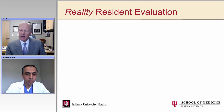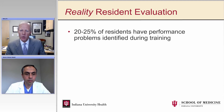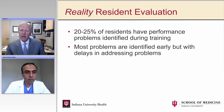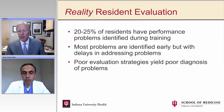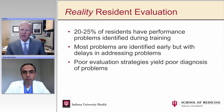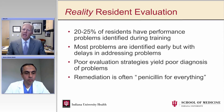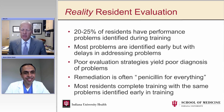We begin by discussing the reality of resident evaluation, because it's somewhat surprising to find out that 20 to 25 percent of residents have performance problems identified during training. Most of these problems are identified early, but there are real delays in addressing them. Probably the most important reason is that our evaluation strategies are poor and do a poor job of yielding the diagnosis for these problems. Remediation is often, as we say, penicillin for everything — 'read more' — and seldom solves the problem. Most residents complete training with the same problems that were identified early.